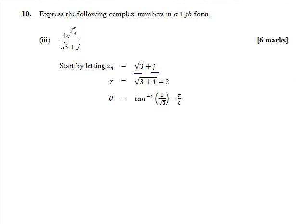So that means we can write z1 as 2e to the j pi over 6. If we substitute that back in, we get z is equal to 4e to the j pi over 3 over 2e to the j pi over 6. 2 goes into 4 twice.